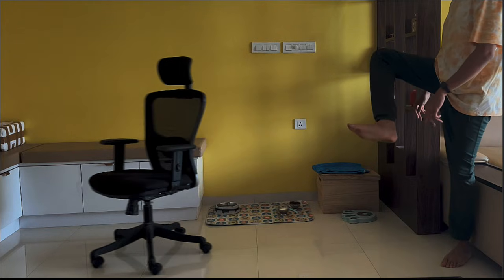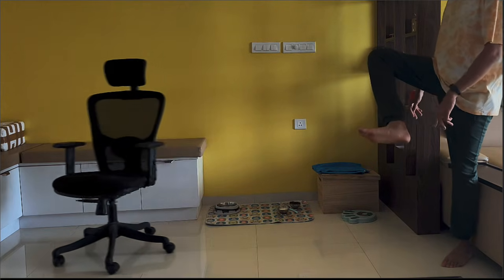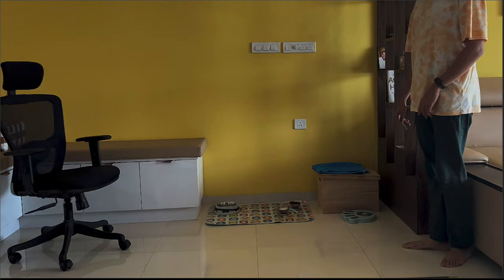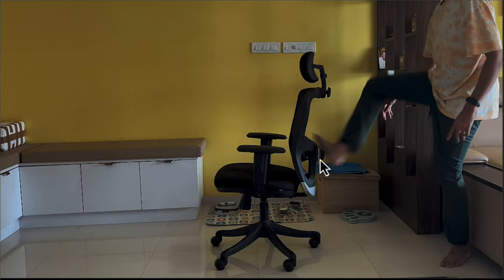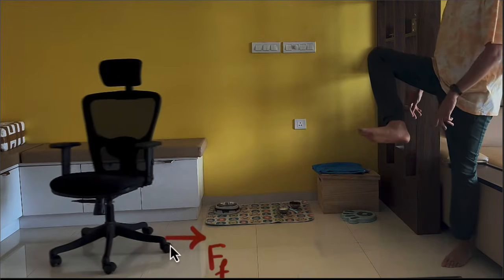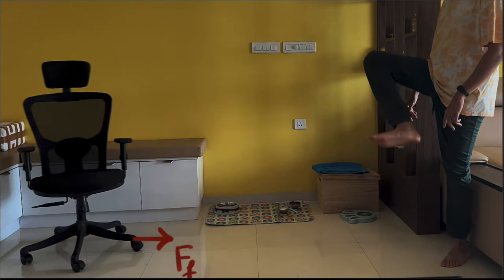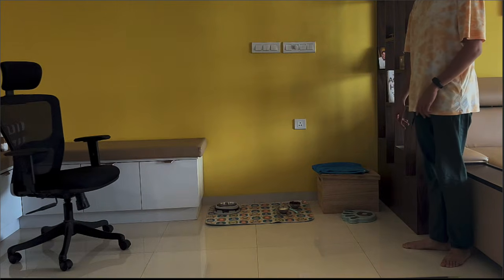But you might say — this chair eventually comes to a stop, why is that? Well, that's because of the second part: it would continue its motion with the same velocity until an unbalanced force acts on it. The unbalanced force acting on this chair making it stop is friction — it's the friction pushing the chair in the opposite direction. If it wasn't for friction, that chair would continue to move with the same velocity.